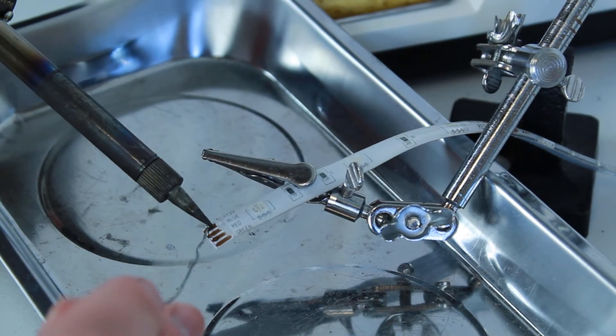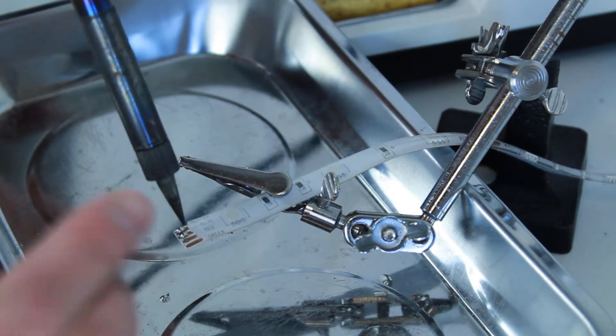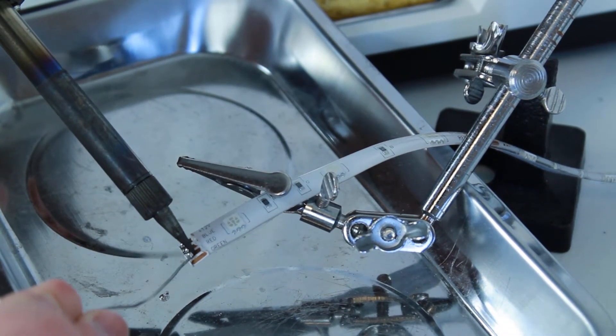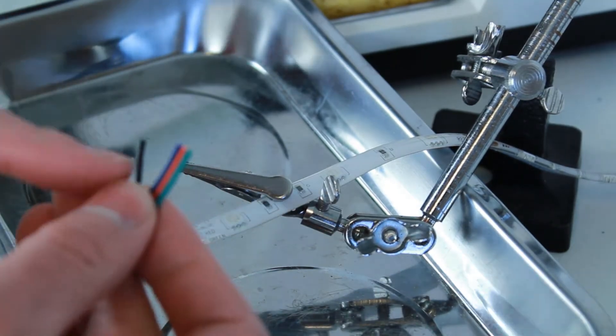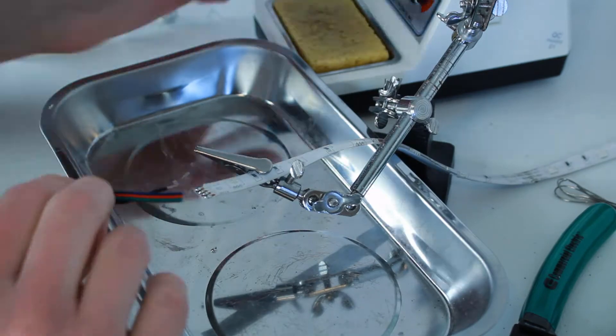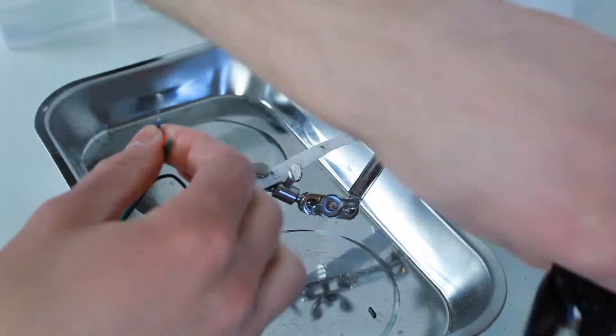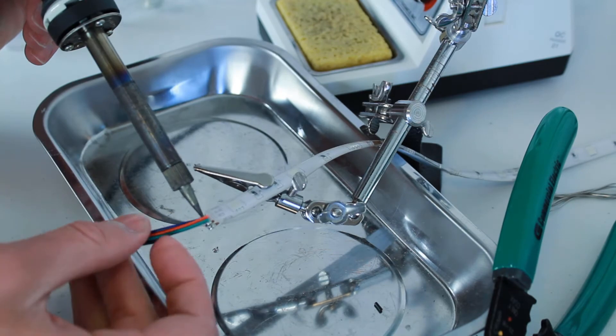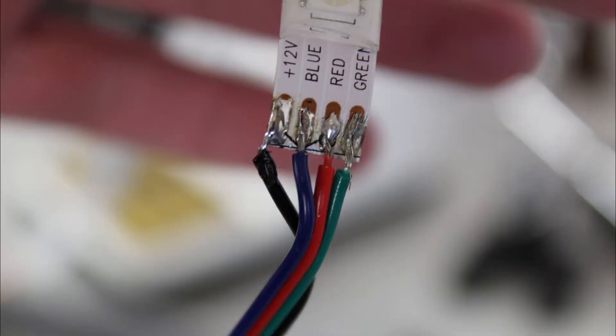Next, we will apply solder to the four contacts. Now we'll strip the wires and solder them to the contacts. Here's the finished connections. My soldering is not that fantastic here, but it worked perfectly and I had no issues when I used it.